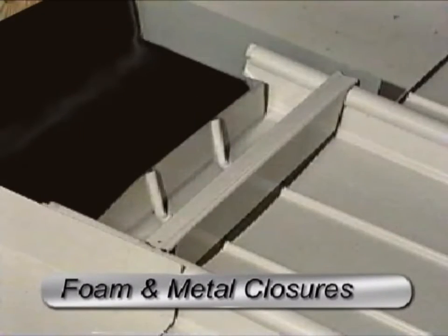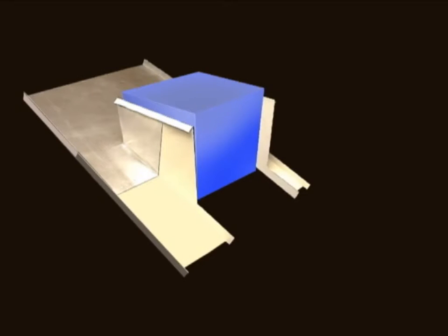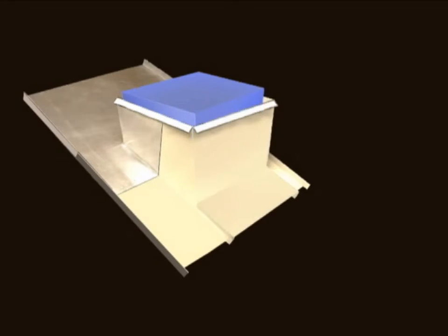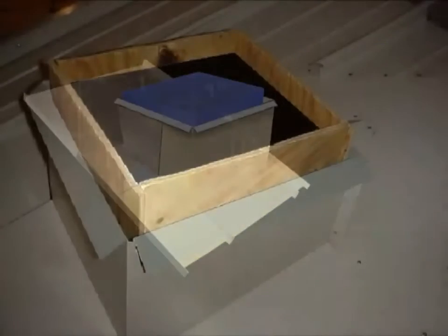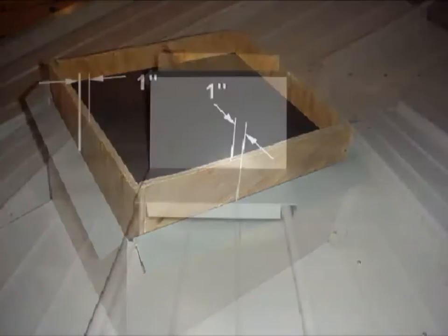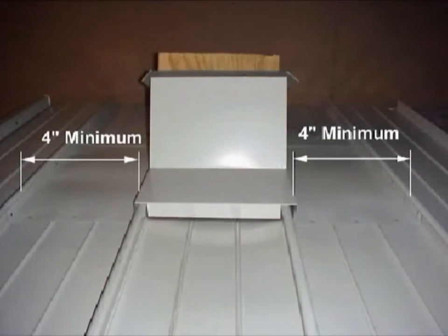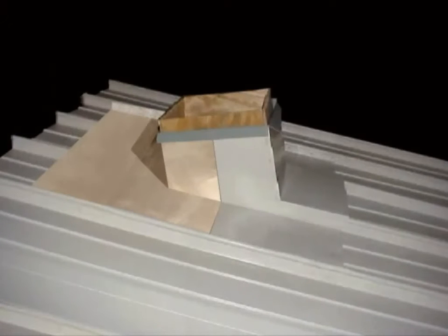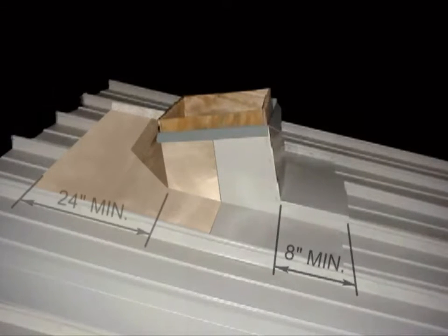The base flashing is designed larger than the penetration to allow for the maximum anticipated thermal movement, usually 1 inch on each side. The side pan of the curb must be made long enough to provide a minimum of 4 inch clearance. The sides must extend a minimum of 8 inches beyond the front face and a minimum of 24 inches beyond the rear face.